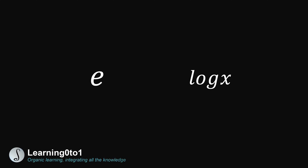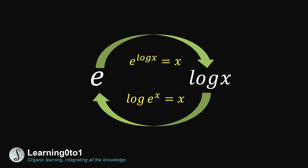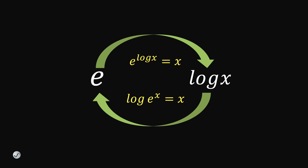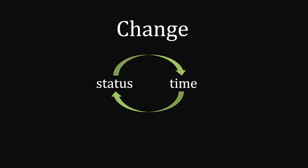In this video, I will talk about the relationship between log and e, and how to use that relationship to solve a real-life problem. One of the universal topics in almost all science is change. Once we observe how one thing changes with the other, we can find out one based on the other. The two things can be status and time, for example.